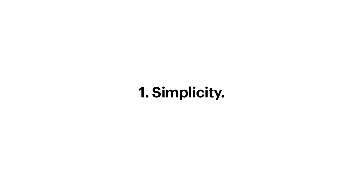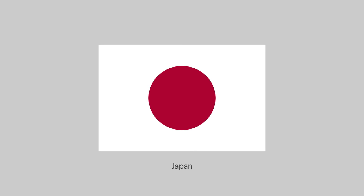The first is Simplicity. Flag design is an exercise in simplicity — the composition of basic elements in a defined field, a reduced colour palette, and no language. The process should be reductive; it's as much about what's not included as what is. A great example is the Japanese flag, a white rectangle with a red circle representing the sun, an important symbol in Japanese culture.